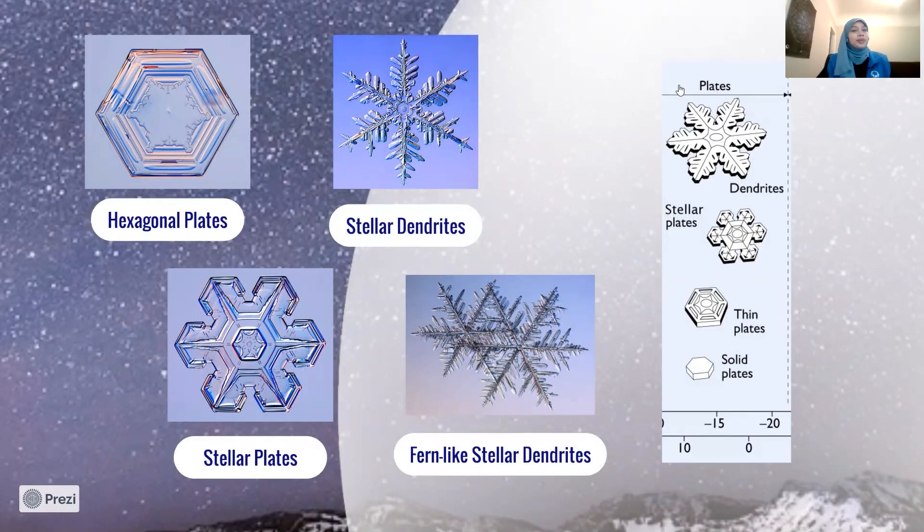Now probably the most common snowflake shape are the stellar dendrites, and this is probably what you would think of when you hear the word snowflakes. And then if the branches of a stellar dendrite look feathery or fern-like, they're called fern-like stellar dendrites. Go figure.